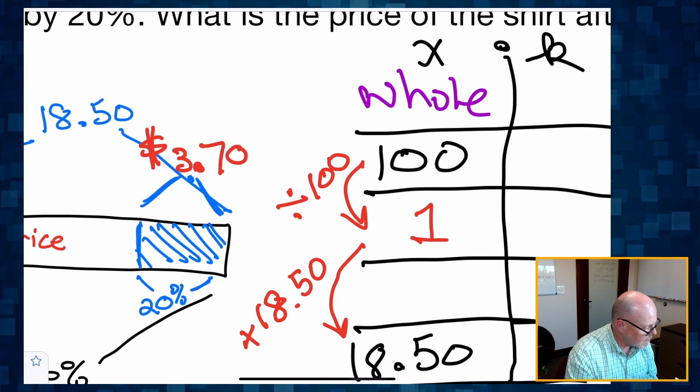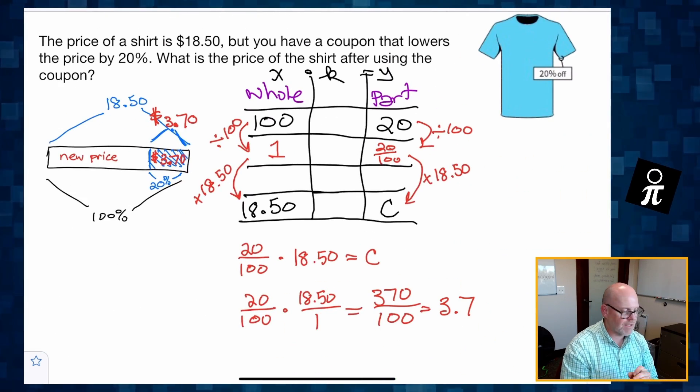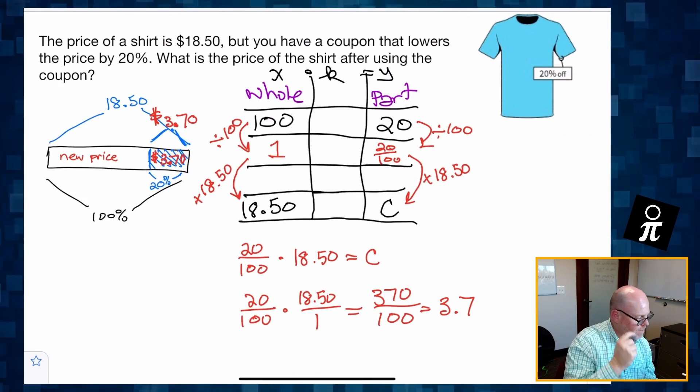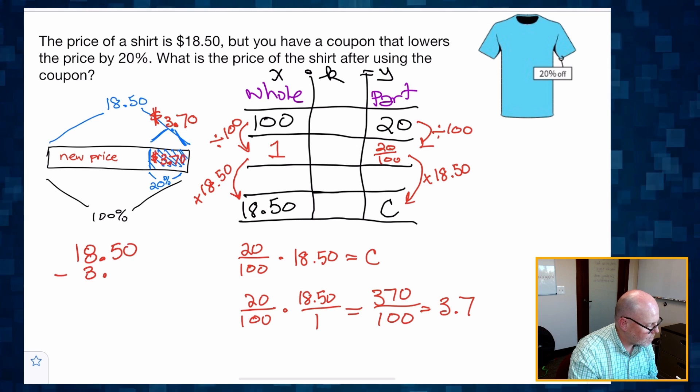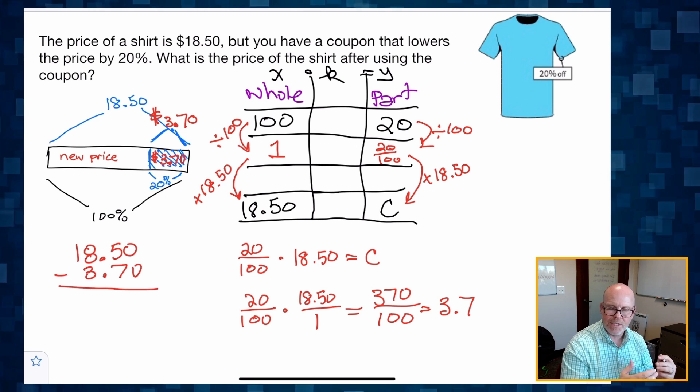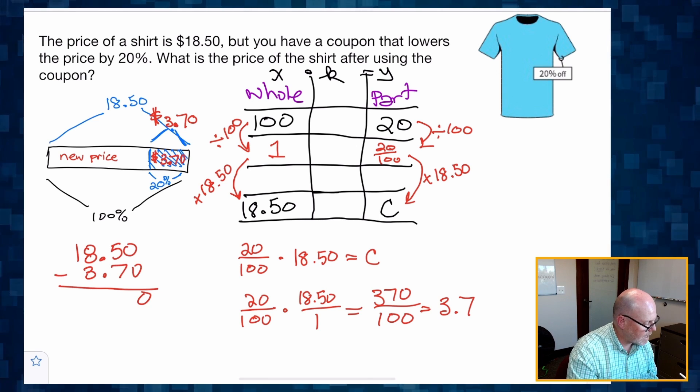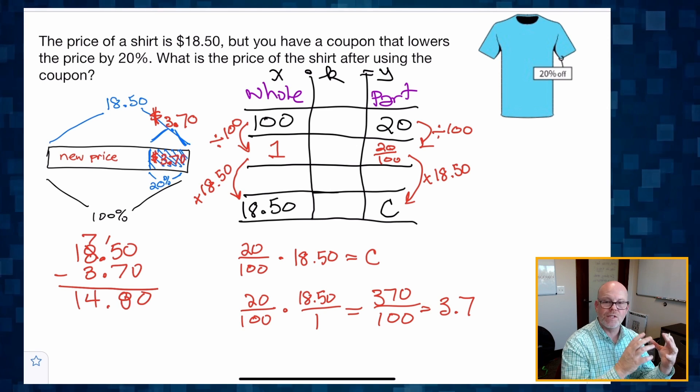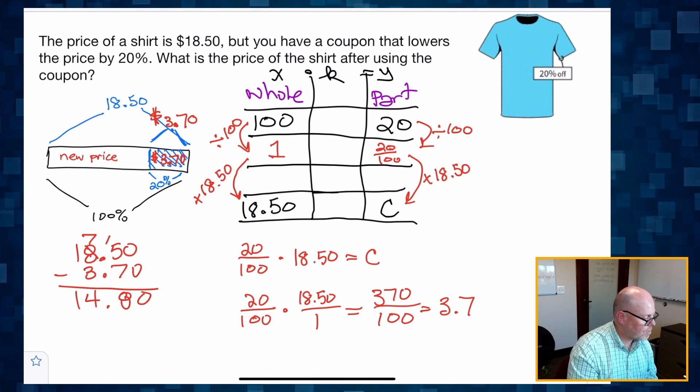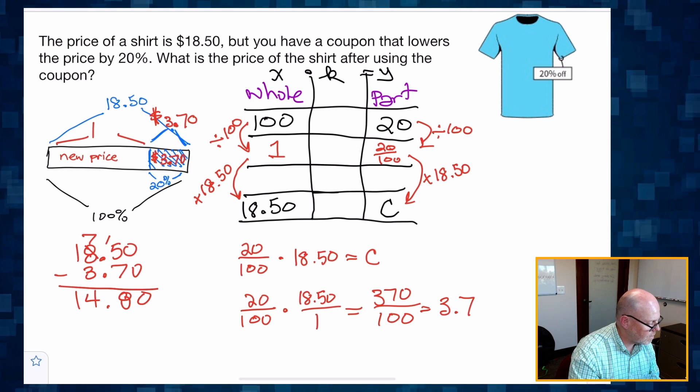So we take the original price, which was $18.50, subtract by $3.70. And when we do that math, we get $14.80 is the new price for our shirt. $14.80. If we want to check our work, we can add the new price plus the discount, and that should give us $18.50 again.